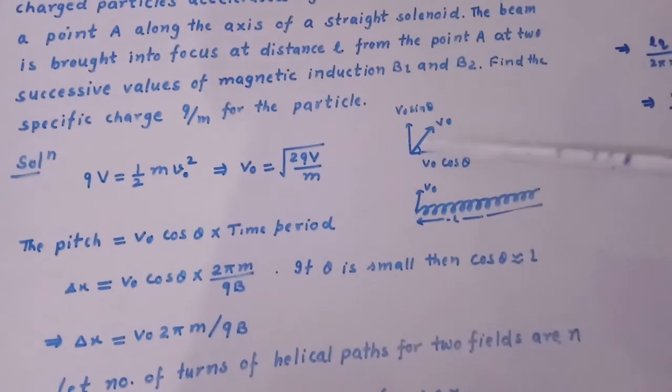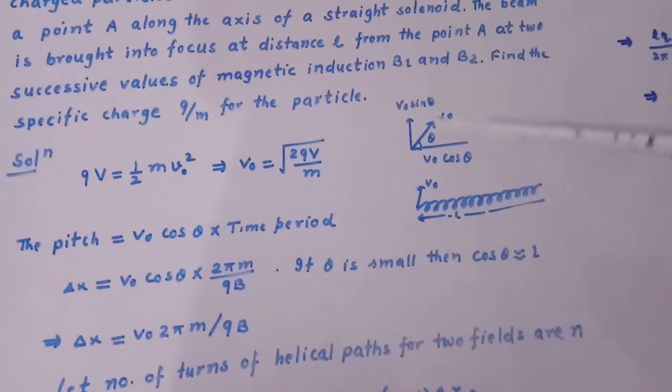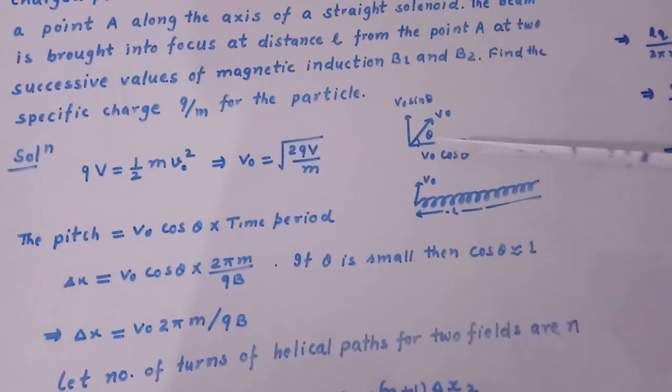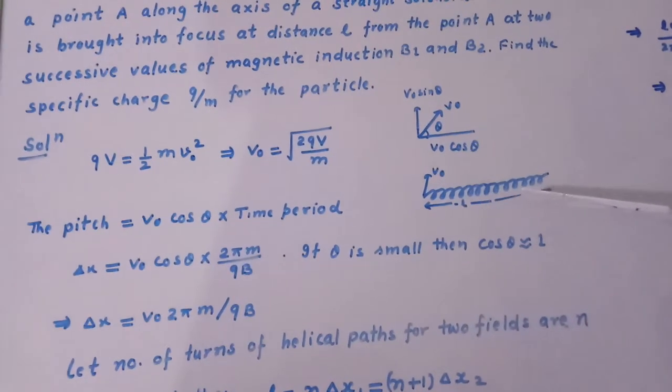Here this is velocity along which particle enters. So this angle is theta. So we take its component V0 cos theta and V0 sin theta. Here solenoid is shown whose length is L.